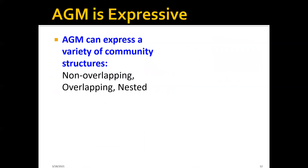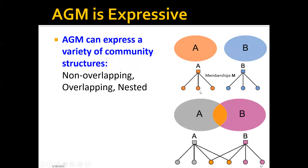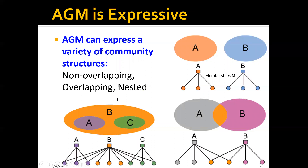The affiliation graph model, or AGM, can express a variety of community structures. It can represent non-overlapping communities — we simply set the membership parameters so that some nodes belong only to community A and others belong only to community B. It can also represent overlapping communities and even nested community structures. In the nested case, we set all nodes to belong to community B, then assign part of the nodes to community A and another part to community C.